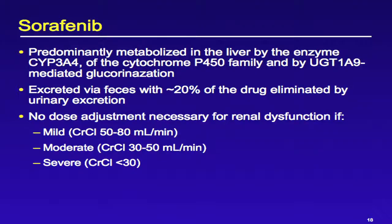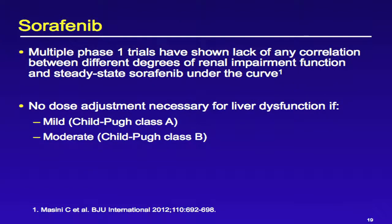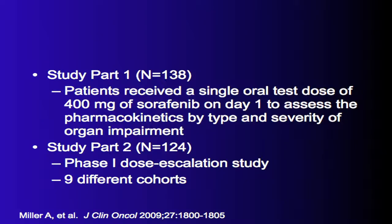Finally, Sorafenib is predominantly metabolized in the liver, excreted via feces with about 20% of the drug eliminated by urinary excretion. There is no dose adjustment necessary for renal dysfunction if mild, moderate, or severe. I'll finish with a phase 1 pharmacokinetic study that looked at Sorafenib in patients with hepatic or renal dysfunction — the CALGB 60301.